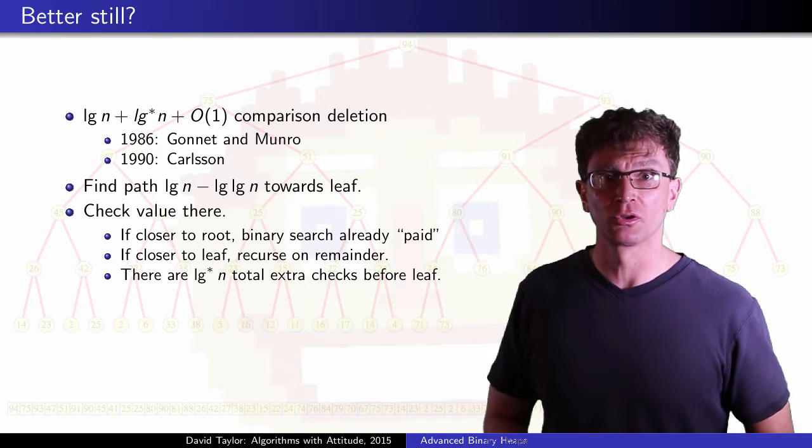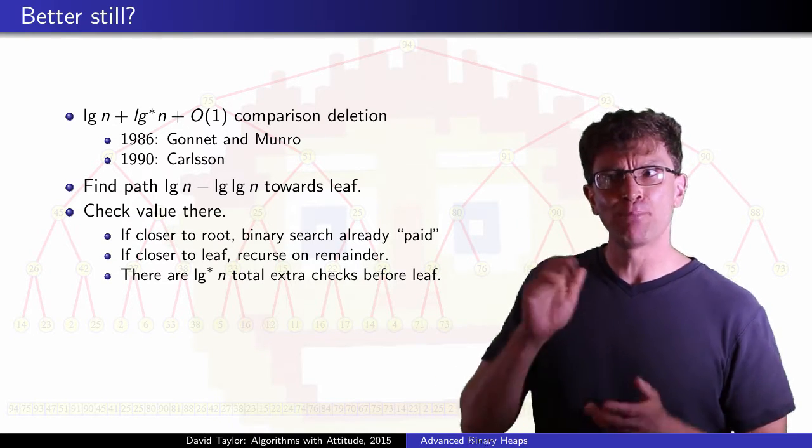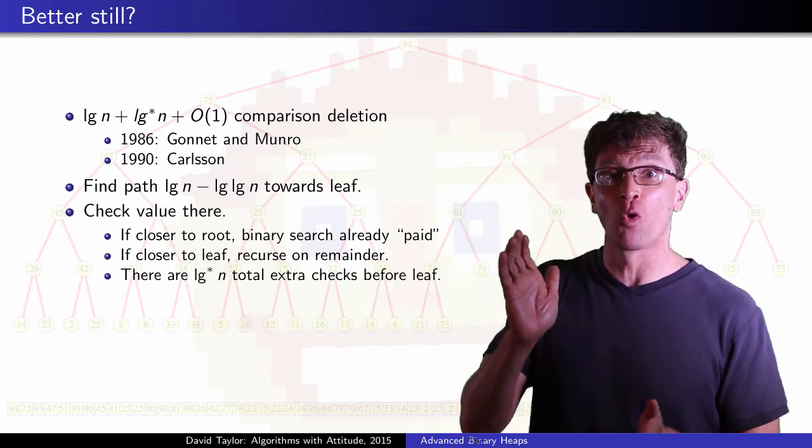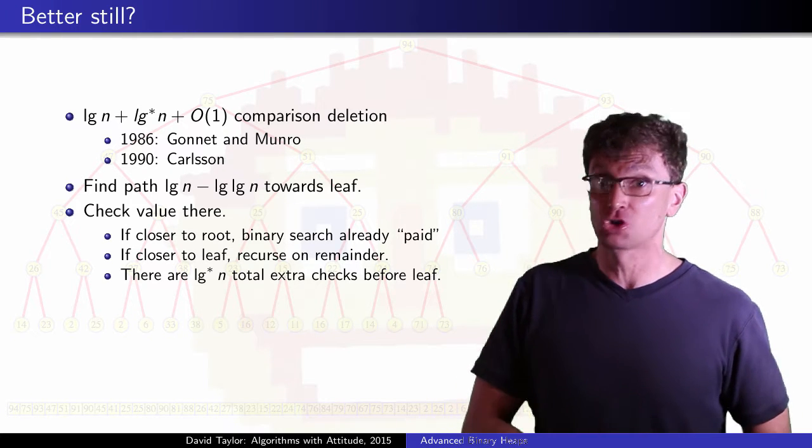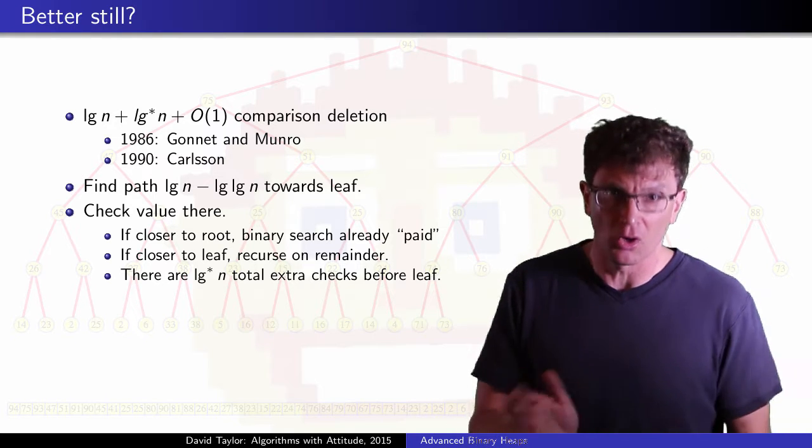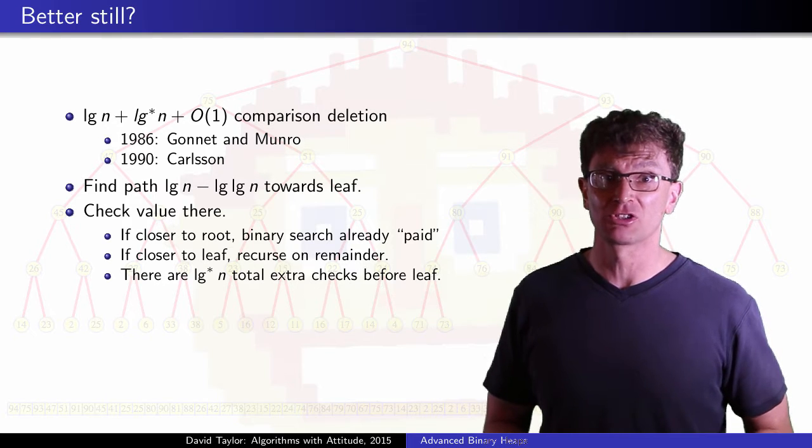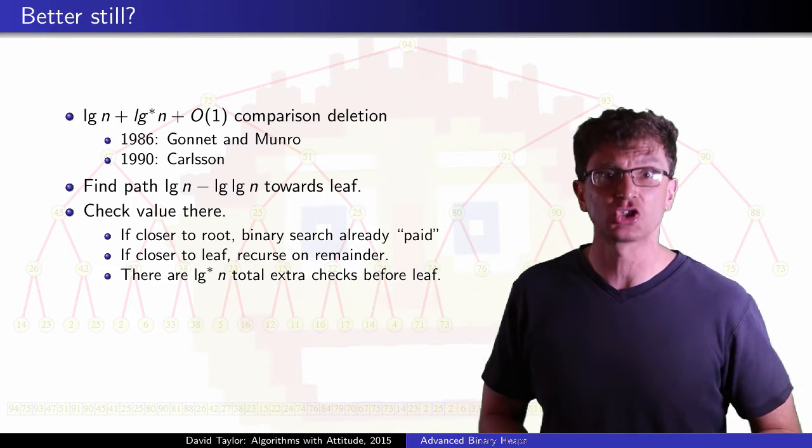If it's supposed to be closer to the root, you do a binary search on the top of the tree, but that binary search is sort of already paid for by the amount of the bottom of the tree that you didn't search. If you have to go closer to the leaf, we'll just recurse on the rest of the tree. But there, your binary search is going to be much smaller, because there's so much less of the tree on the bottom.